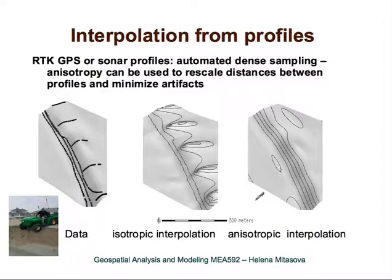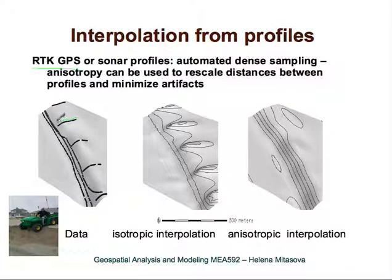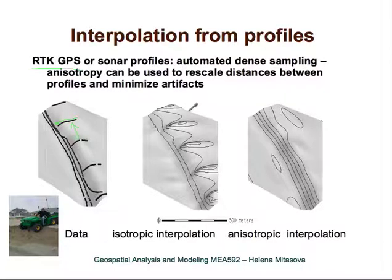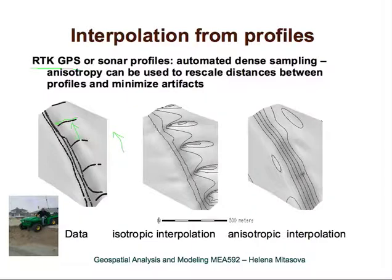Anisotropy can also help when working with data gathered in an anisotropic way. For profiles taken by real-time kinematic GPS or single-beam sonar, we have very dense points along the profile but the profiles are far apart. With standard interpolation this creates artifacts like little hills along the data points and little valleys between them. One way to deal with this is to apply anisotropic tension, rescaling distances in one direction, so the resulting beach interpolation looks more realistic.